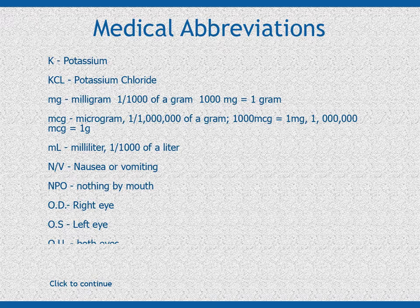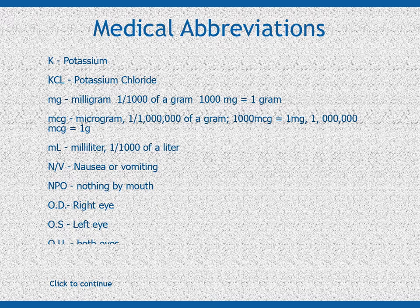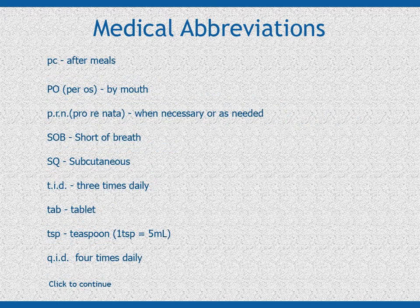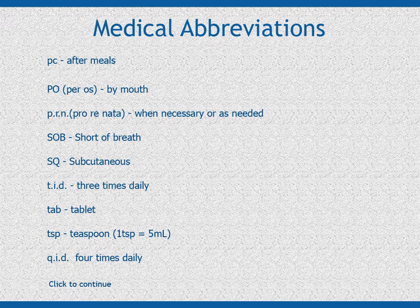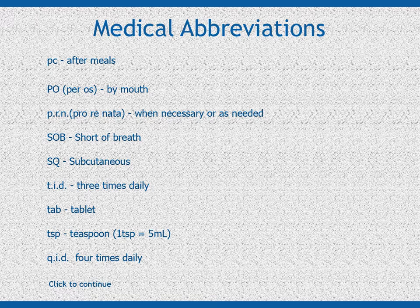N.P.O. — Nothing by mouth. O.D. — Right eye. O.S. — Left eye. O.U. — Both eyes. P.C. — After meals. P.O. — Per os, by mouth. P.R.N. — When necessary or needed. S.O.B. — Short of breath. S.Q. — Subcutaneous. T.I.D. — Three times daily. T.A.B. — Tablet. T.S.P. — Teaspoon. Q.I.D. — Four times daily.